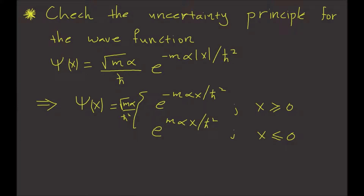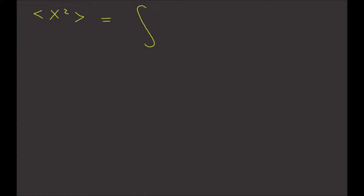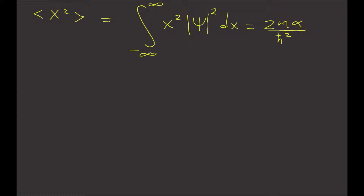We have to calculate the expectation value of x squared. We sandwich x squared between psi-star and psi, and since x squared is just a multiplication operator, we can put it outside: x squared times psi-star psi dx. That's the same as 2 times m times alpha divided by h-bar squared, times the integral from 0 to infinity of x squared times e to the minus 2m alpha x over h-bar squared.